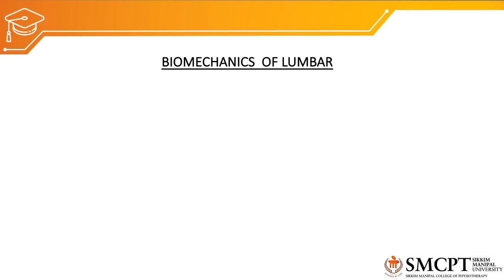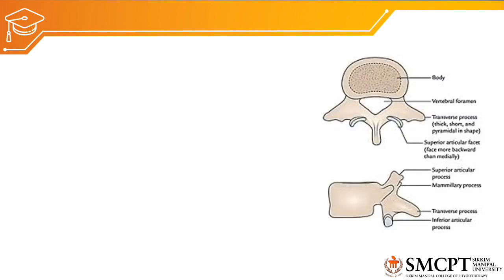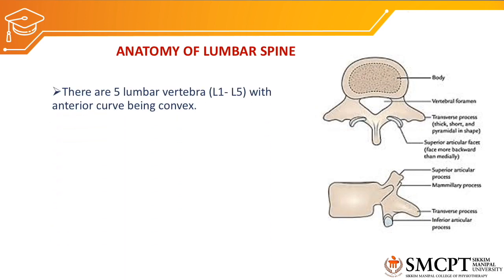Hello everyone, welcome to biomechanics class. Now we'll discuss the lumbar vertebral spine. Let us brush up the basic anatomy of the lumbar spine in brief. There are five lumbar vertebrae, L1 to L5, with the anterior curve being convex and the posterior curve being concave. So the normal curvature of the lumbar vertebral spine is lordotic in posture.